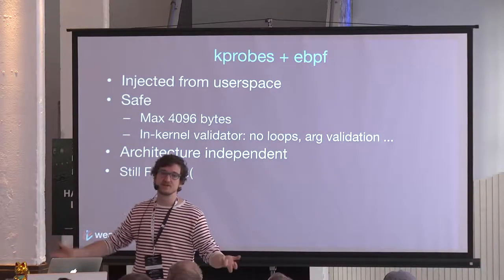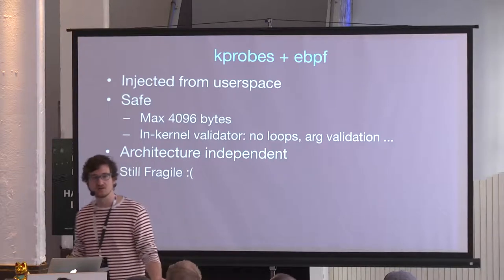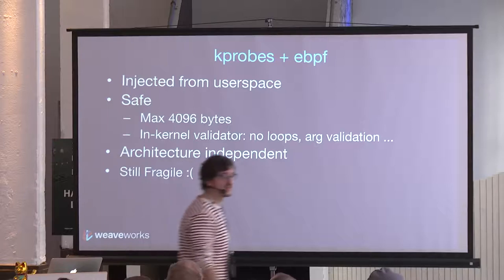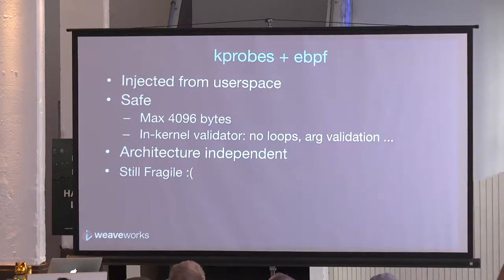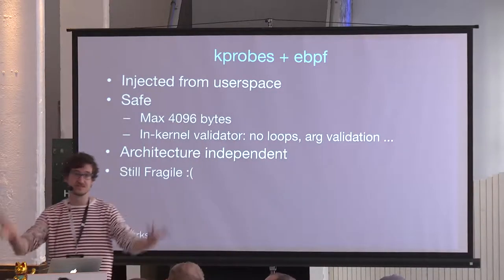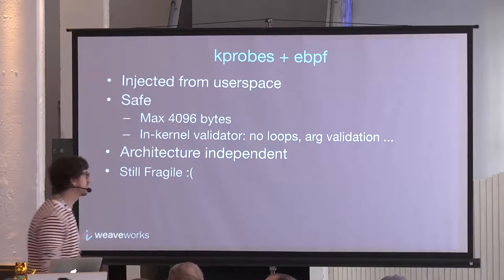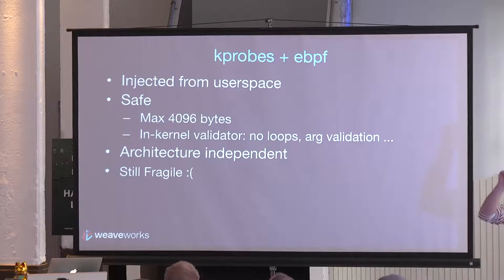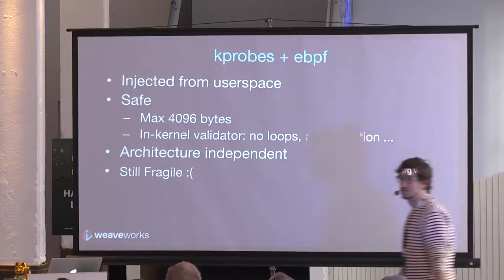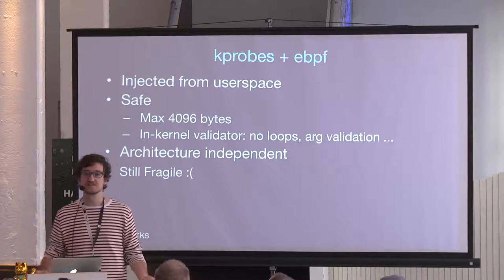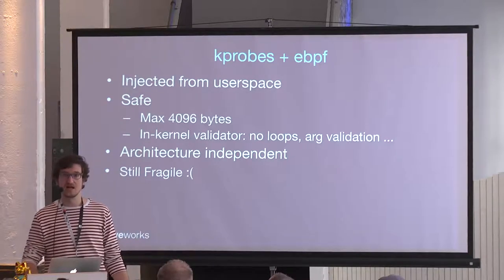It's not entirely safe from a security perspective — you may be able to reveal kernel details that shouldn't be available to every user. But the nice thing is that eBPF is architecture-independent, so a program written for Intel 64-bit should run on ARM as well. Unfortunately it's still fragile in one sense: kprobes still inject at a kernel symbol plus offset, so even architecture-independent eBPF bytecode still depends on kernel API version and data structure layout.